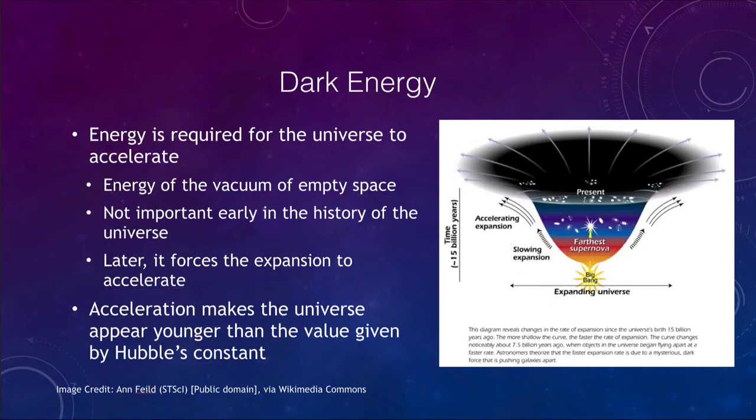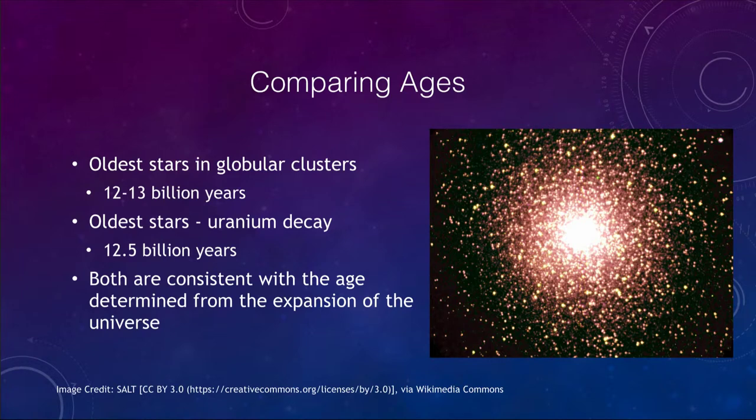How can we compare? What other ways can we use to look at various ages of things in the universe? We have a couple of ways to determine ages. One is looking at stars in globular clusters. We can look at the oldest stars that are just finishing up their lives, and we can find that globular clusters tend to be in the range of 12 to 13 billion years old.